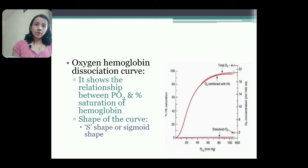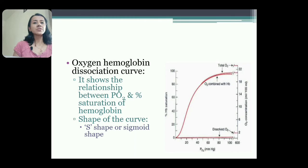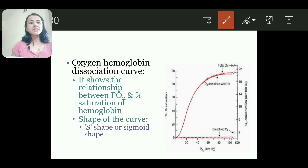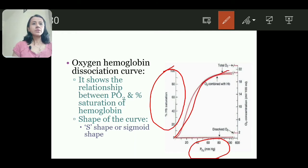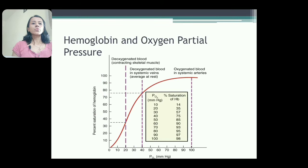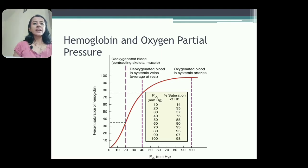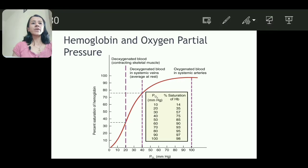The oxygen-hemoglobin dissociation curve is the relationship between percentage hemoglobin saturation and partial pressure of oxygen. On the x-axis we have PO2 and on the y-axis percentage saturation of hemoglobin. The curve is S-shaped or sigma-shaped. To draw the curve, write PO2 on the x-axis and percentage saturation on the y-axis.